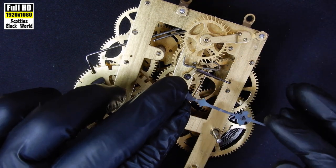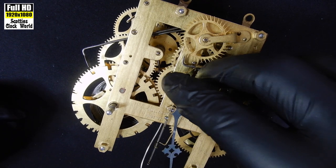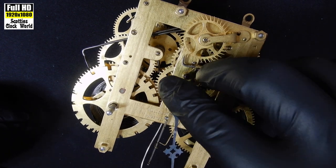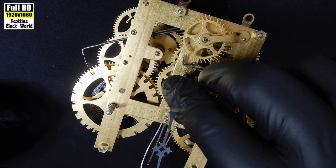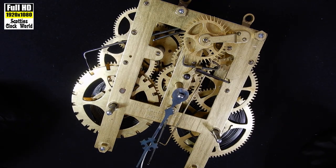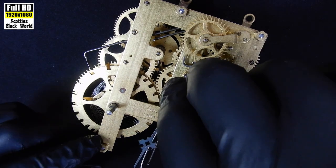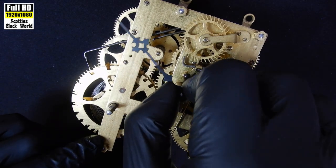We put the minute hand back on the movement. Turn it round to the half hour. That wheel is obviously out. We'll fix that when it comes round.